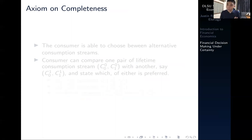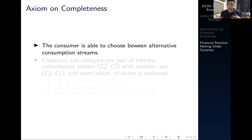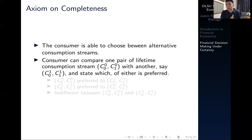A consumer, as in typical microeconomic theory — since financial economics is heavily grounded in micro — must adhere to the axioms of consumer behavior. Instead of dealing with mere goods, we deal with lifetime consumption streams, C-naught and C1. The first axiom is completeness, which states that the consumer is able to choose between different alternative consumption streams. That is, if presented with two consumption streams, the consumer can rank and choose which one is preferred or is indifferent to.